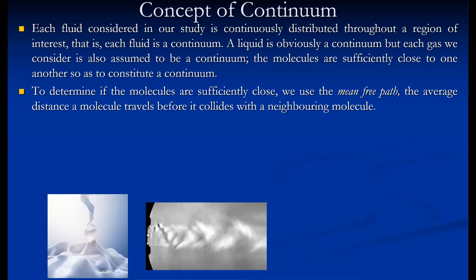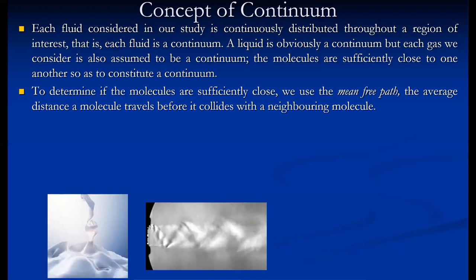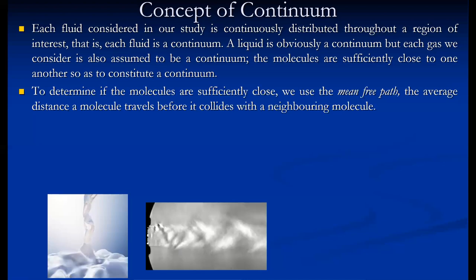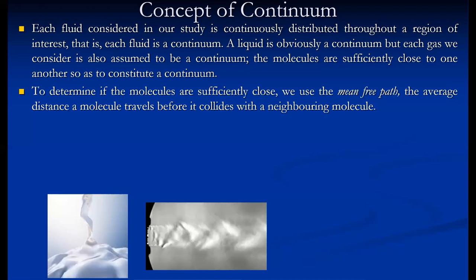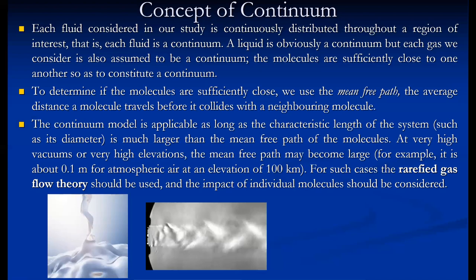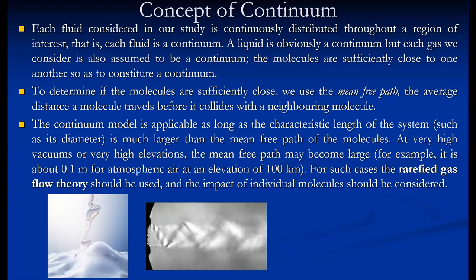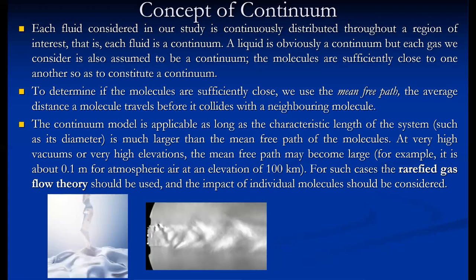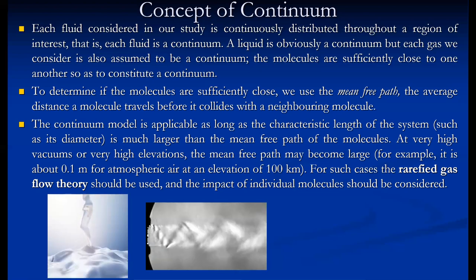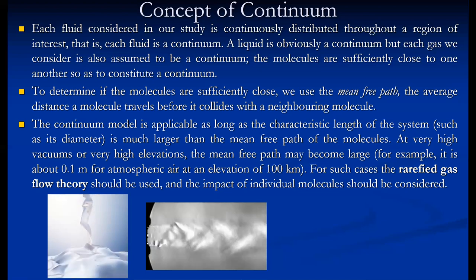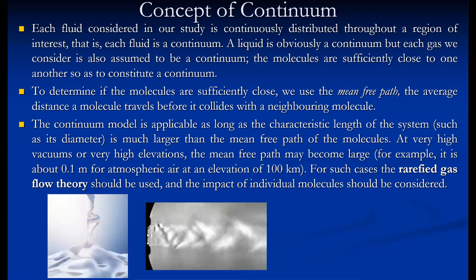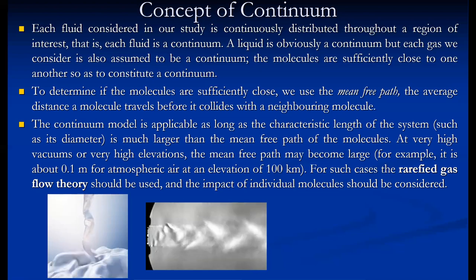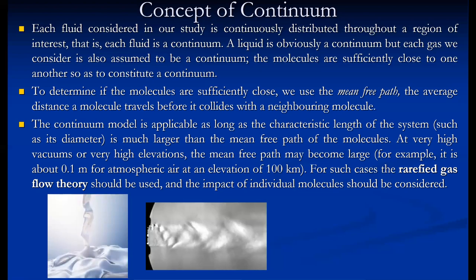Whatever the pressure and temperature in that field, we can consider that as the temperature and pressure of an individual molecule as well. To determine if molecules are sufficiently close, we use mean free path — the average distance a molecule travels before it collides with a neighboring molecule. The continuum model is applicable as long as the characteristic length of the system, such as its diameter, is much larger than the mean free path of the molecules.